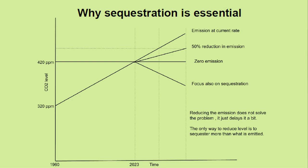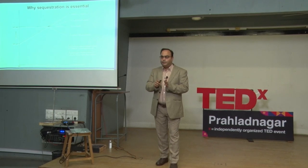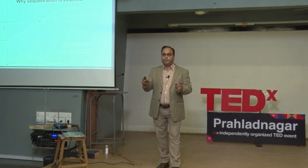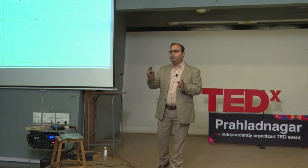The third line represents the best possible scenario: if we reduce our emission level to zero — that is zero emission — we will still remain at 420 ppm. So reducing the emission is not the same as reducing the CO2 level. To reduce CO2 level, you need to sequester. If you just focus on reducing emissions, all you are doing is delaying the whole thing. The level you would have reached in one year, if you reduce your emission by 50 percent, you will reach that level in two years — that's all.